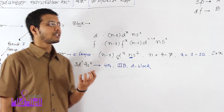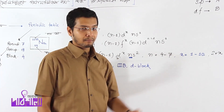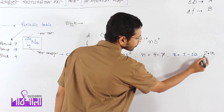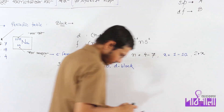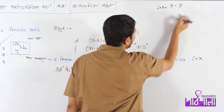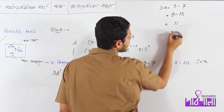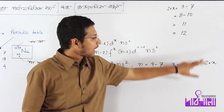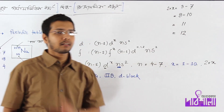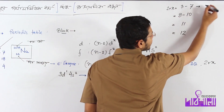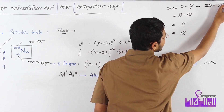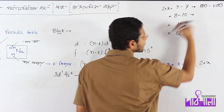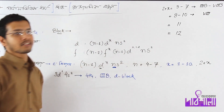For the D-block, the group number formula is 2 plus x. If x equals 1, the group is 3. If x equals 2, the group is 4, and so on. The values progress: 3B, 4B, continuing up through 7B, then 8, 8, 8, then 1B and 2B.